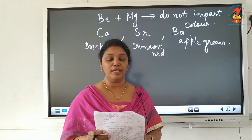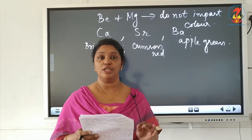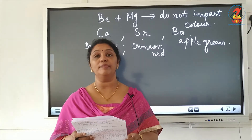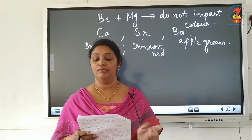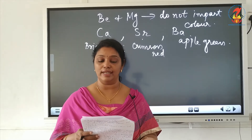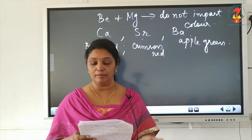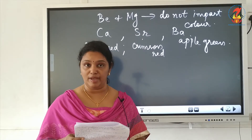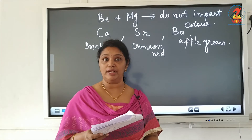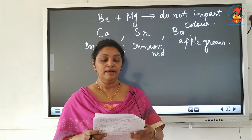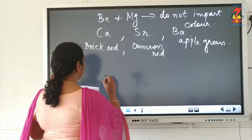Now let us discuss the chemical properties of group 2 elements. Beryllium and magnesium react with air and water — with water they give hydroxides, but they burn in air to give oxides. Beryllium gives beryllium oxide and magnesium gives magnesium oxide. With nitrogen, beryllium gives beryllium nitride and magnesium gives magnesium nitride. Group 2 elements also combine with halogens to form halides.